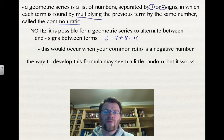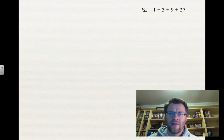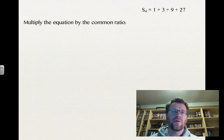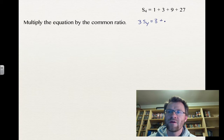The way to develop this formula may seem a little random, but it works. We're going to follow the same process with a short series to show that it works, then apply that process to the general series. Here's our original series: the sum of the first four terms is 1 plus 3 plus 9 plus 27. The first thing we're going to do is multiply both sides of the equation by the common ratio, which is 3. So we get 3·S₄ equals 3 plus 9 plus 27 plus 81.